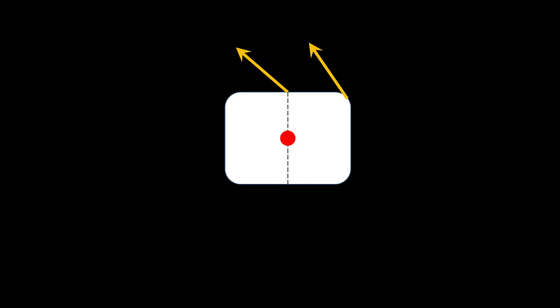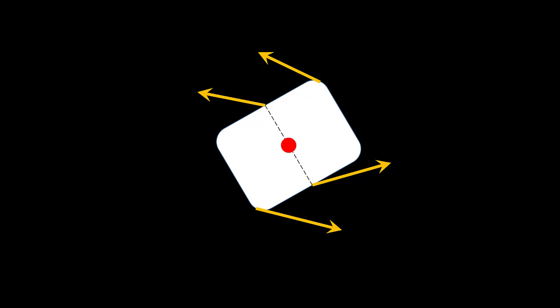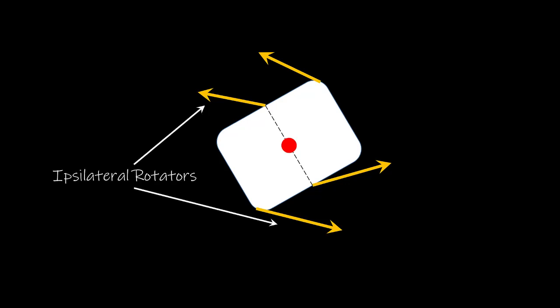Before we talk about movements in the transverse plane, it's important to understand a couple of ideas about force vectors in the transverse plane. Notice that we are going to have an axis of rotation that goes through the center of this particular body. If I was going to rotate this body to the left, I can have an anterior force vector on the right side, an anterior force vector on the left side, a posterior force vector on the left side, or a posterior force vector on the right side — all of which rotate this body to the left. Force vectors on the same side are known as ipsilateral rotators, while force vectors on the opposite side are called contralateral rotators.